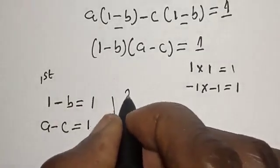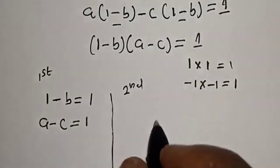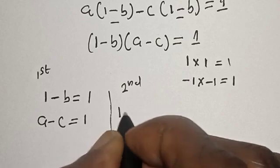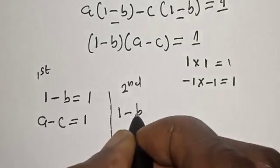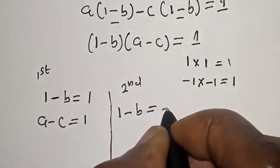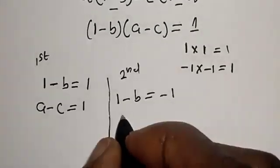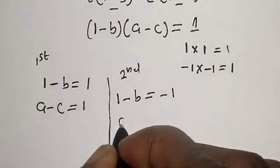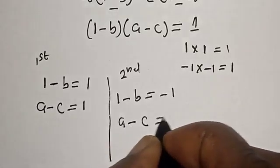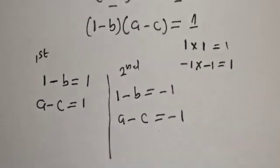And for the second case: 1 minus B is equal to minus 1, and A minus C is equal to minus 1.